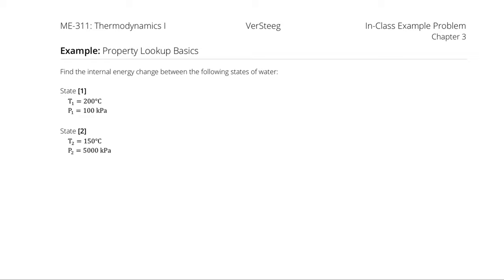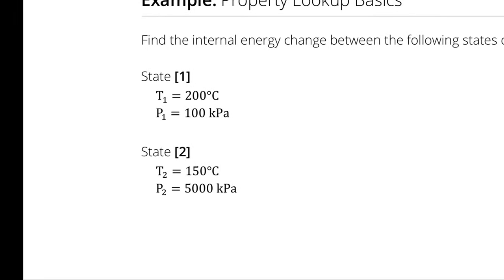As a general rule, you want to begin by trying to fix your state points. Remember that it takes two independent intensive properties to fully define a state point. At our state 1 conditions, our two independent intensive properties which fully define that state point are temperature and pressure. From those two properties, I can use the tables to determine whatever else I want, including but not limited to internal energy.